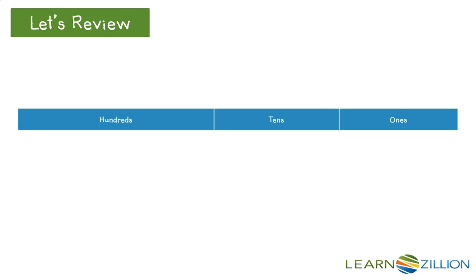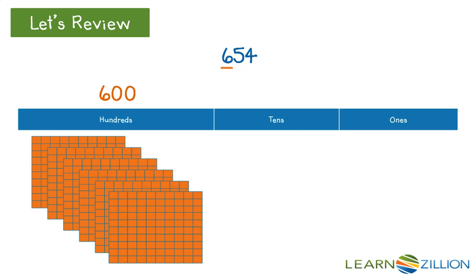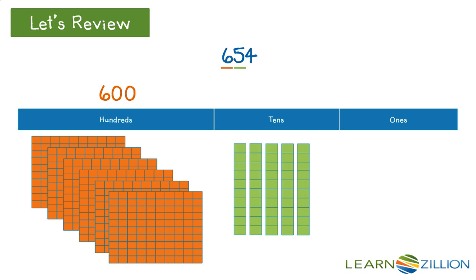Let's review. Numbers can be broken down into place value with base 10 blocks. For example, the number 654 can be broken into 6 hundreds, 5 tens or 50, and 4 ones.